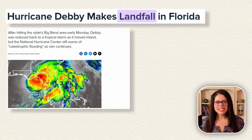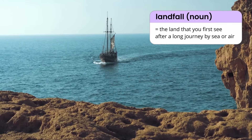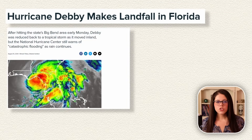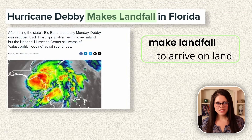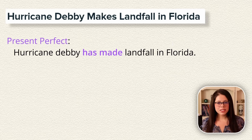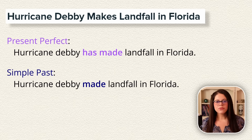Landfall is a noun that you often see in literature. It's the land that you first see after a long journey by sea or air. So the collocation 'to make landfall' means to arrive on land. In standard English, we would use the present perfect or simple past tense: 'Hurricane Debbie has made landfall in Florida' or 'made landfall in Florida.'